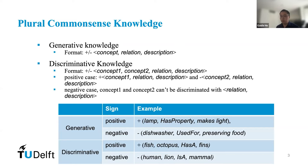For example, fish and an octopus can be discriminated with the attribute 'has a fin.' By comparison, human and lion are both mammals, so we can't discriminate them with the attribute 'is a mammal.'